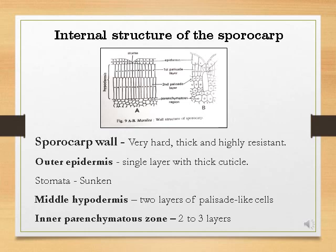The second region is the hypodermis. The hypodermis consists of two layers of radially elongated palisade-like cells. These cells are compactly arranged without any intercellular spaces between them. This is followed by a two to three layered parenchymatous zone. The inner cells of this zone form a gelatinous ring inside the sporocarp wall.